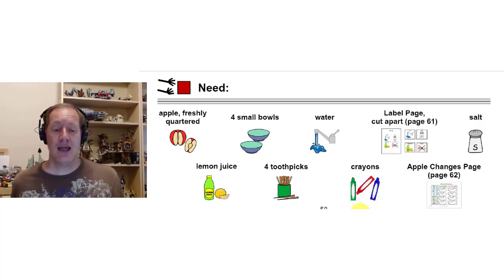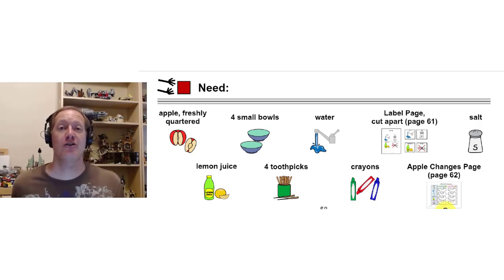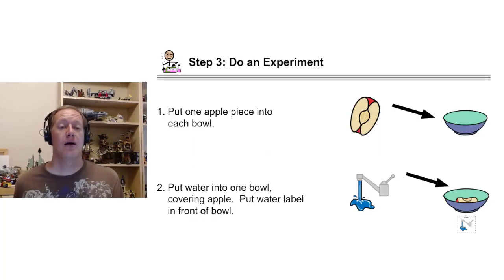We need some salt, we need some lemon juice, we need four toothpicks, we need some crayons or something to color with, and we need our apple changes page. Go ahead and gather all your materials now.